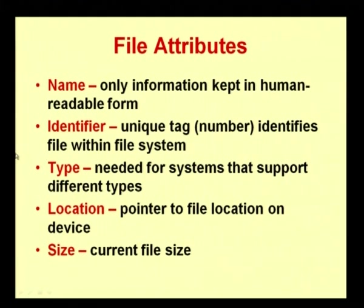Consider a file you type in Microsoft Word. The file will definitely have a name and a file identifier. The file identifier is a unique tag number that identifies the file within the file system. We have different file systems such as FAT (File Allocation Table) and NTFS (New Technology File System), which we will see in forthcoming slides. Another attribute is the type — whether it is a .doc file or a .docx file.